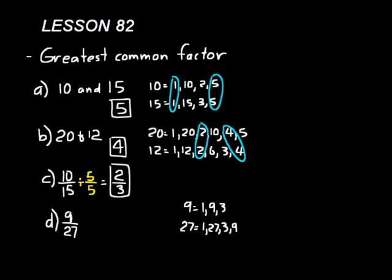So we need to divide nine twenty-sevenths by nine over nine, because that's our greatest common factor. If we had divided by three over three, that's a common factor but not the greatest, and we would have had to do two steps to solve the problem. Nine divided by 9 equals 1, and twenty-seven divided by 9 equals 3. So one-third is the reduced form of nine twenty-sevenths.